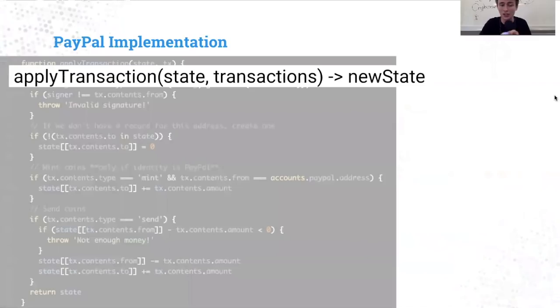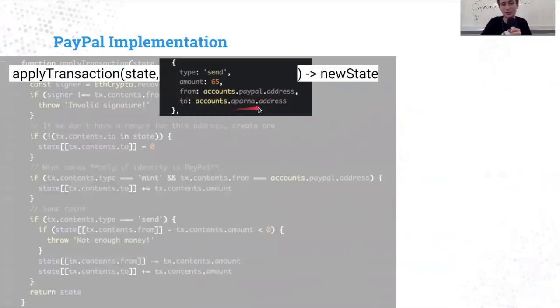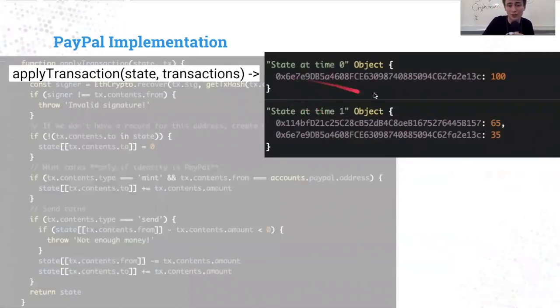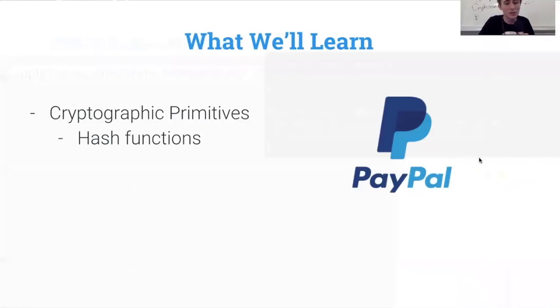Start out with apply transaction. There's a state and state transitions. The state has a balance of an account, and then the transaction shows sending 65 from one address to another. There's a new state where the 65 has been sent to a new address and 35 is remaining. Very simple. Take a state, add a transaction, you get a new state. During this section, we'll learn about cryptographic primitives, like hash functions and signatures. Pretty easy stuff.